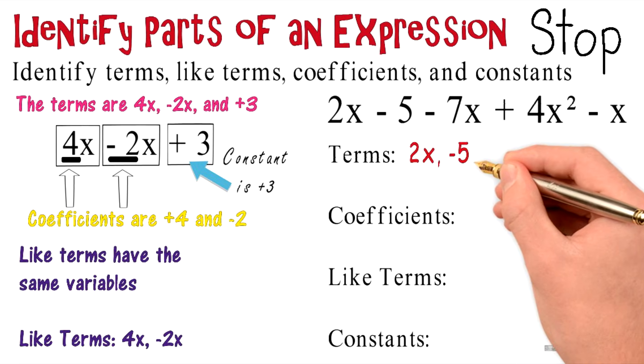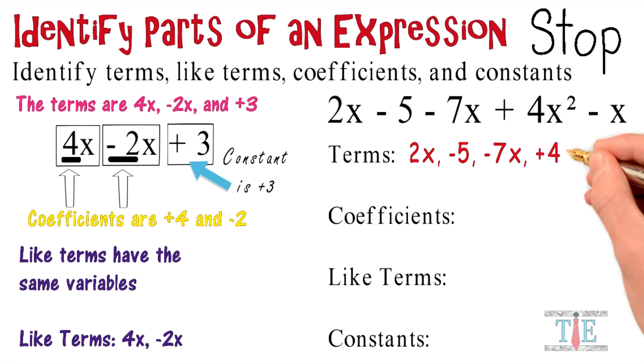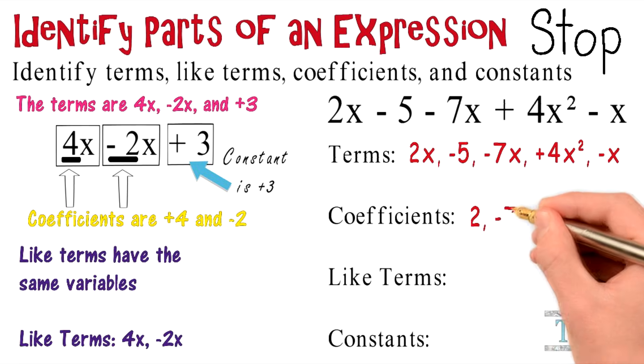The terms are 2x, negative 5, negative 7x, plus 4x squared, and minus x. The coefficients are 2, negative 7, 4, and negative 1.